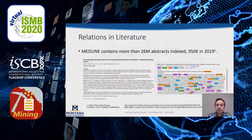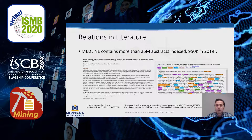Researchers publish their findings from wet lab experiments in biomedical literature, which is considered one of the most valuable resources for extracting information. There is a lot of information hidden in biomedical literature. Medline contains more than 26 million indexed abstracts, among which 950,000 were indexed in 2019, and the growth rate is exponential, making manual curation almost infeasible.